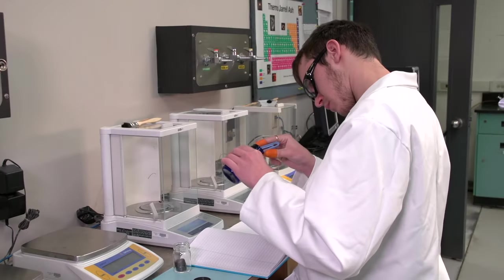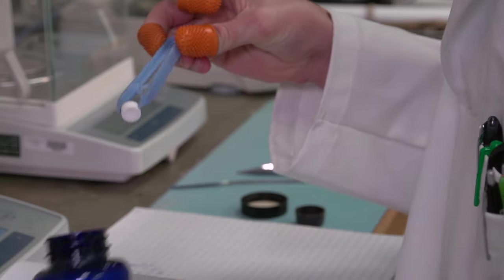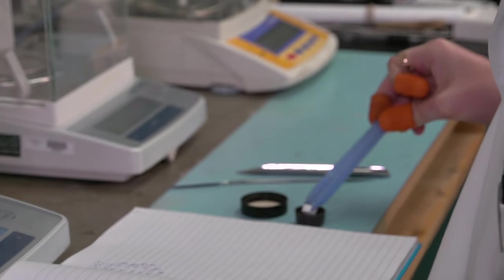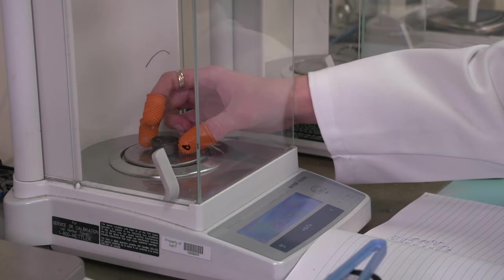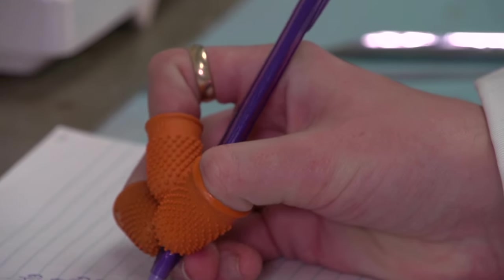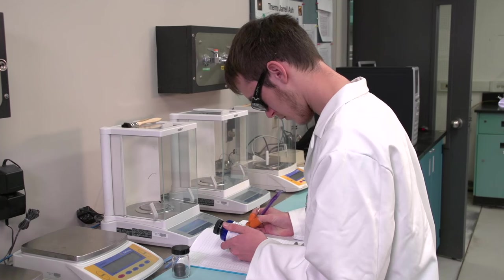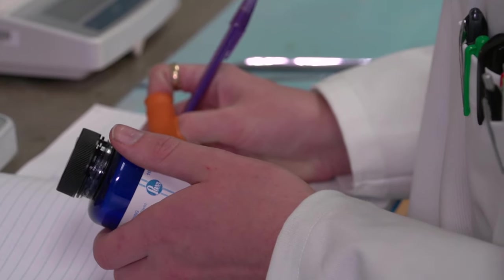In the sample cup provided, weigh a pellet of benzoic acid on the analytical balance and record the mass. Record the enthalpy of combustion of benzoic acid as provided on the benzoic acid reagent bottle.